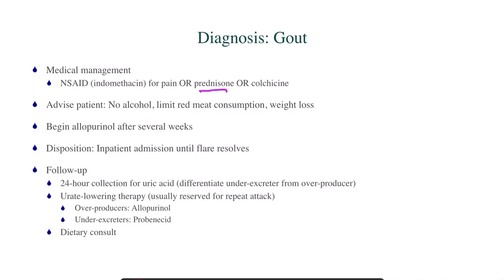If you're taking CCS, you want to know to advise the patient: no alcohol — alcohol worsens gout — limit red meat consumption, as meat contains purines which ultimately become uric acid, and encourage weight loss. You will begin allopurinol or probenecid, depending on something we'll talk about in a little bit, after several weeks — it is not a treatment for acute gout flares.